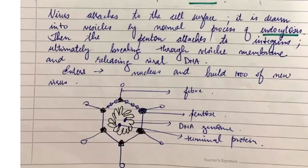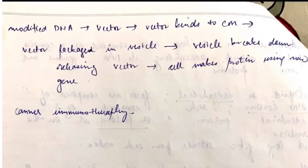The virus attaches to the cell surface and is moved into the vesicles by the normal process of endocytosis, that means it is pushed inwards. Then the pentons attach to the integrins, ultimately breaking through the vesicle membrane and releasing viral DNA. This is how the nucleus enters and builds thousands of new virus. This is a small flowchart showing the entire process.